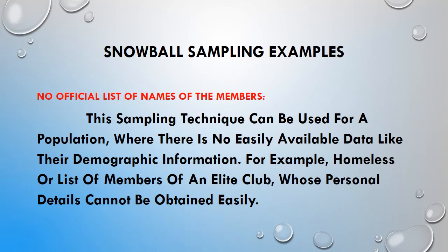Snowball sampling examples. This technique can be used for a population where there is no easily available data, such as demographic information. For example, homeless people will not have a home number, and those who don't have an election card, family card, or personal details available cannot be easily identified. For these types of people, we can go for snowball sampling.